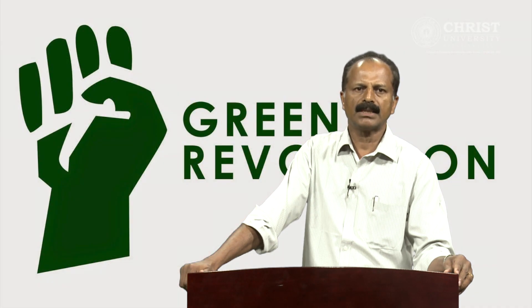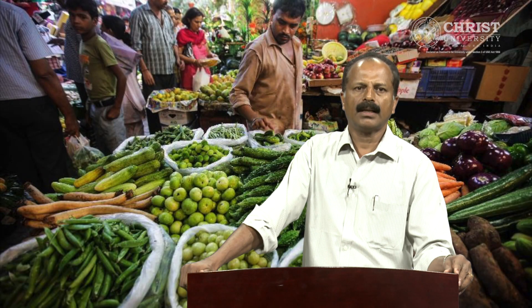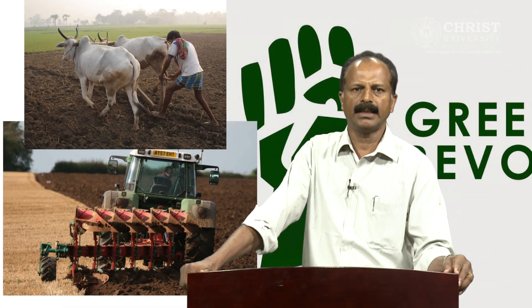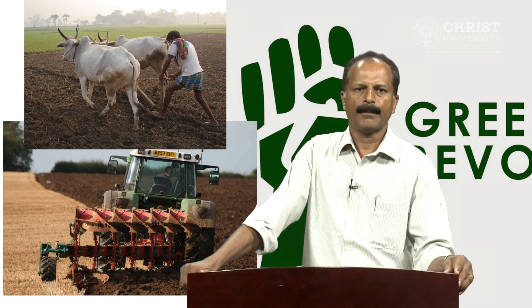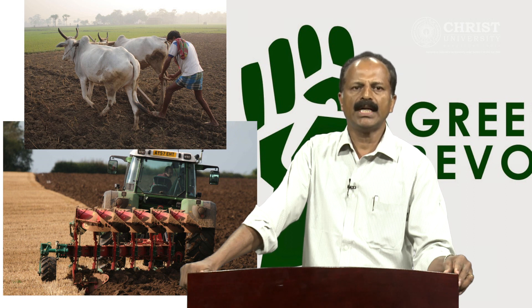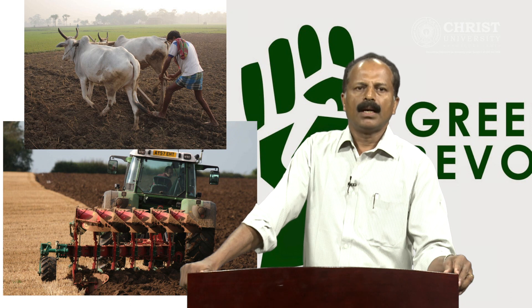With the active encouragement of the government and international agencies, the green revolution was enthusiastically adopted in India. Food production increased and the country became self-sufficient. The green revolution, however, changed traditional agricultural practices — farmers had to buy new seeds, fertilizers, and pesticides every year. Soon, the traditional varieties disappeared, leaving just a few HYVs. In other words, diversity gave place to uniformity.